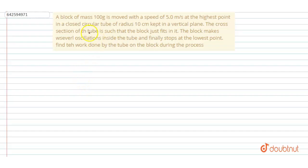It is given that mass of the block is 100 grams, so it will be 0.1 kg. The velocity with which it started at the highest point, initial velocity, is 5 meters per second. And the radius of the tube is 10 centimeters, that is 0.1 meters.